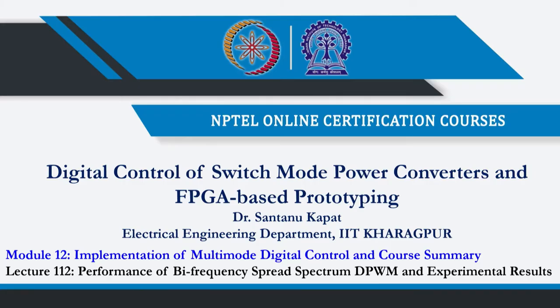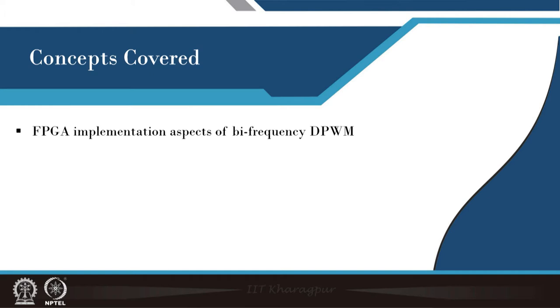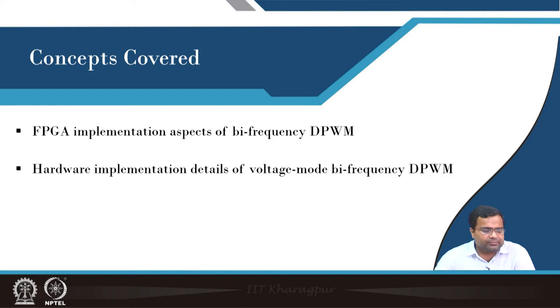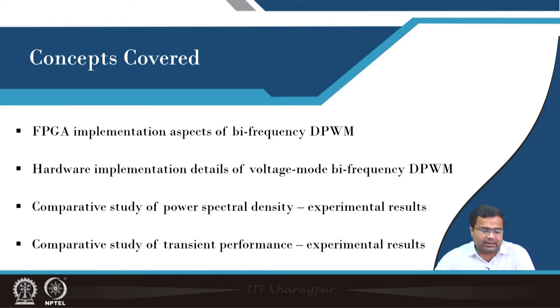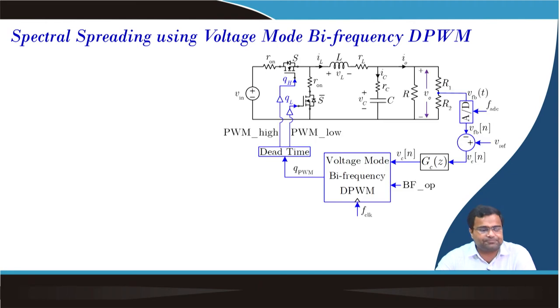Welcome. This is the continuation of the previous lecture and we are going to consider here the performance assessment under bi-frequency spread spectrum DPWM using experimental results. We will first briefly touch upon the FPGA implementation aspect for our hardware, then show the hardware implementation detail of voltage mode bi-frequency DPWM, then a comparative study of power spectral density using experimental results, and also the impact on transient performance using experimental results.